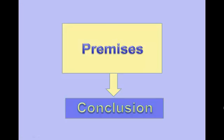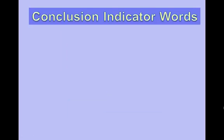In arguments, you have an attempt to make a proof. That is, there is evidence given in support of a conclusion. Some conclusion indicator words include the following.